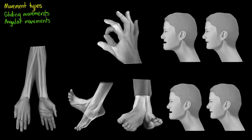You've probably noticed by now that I haven't pointed out any of these movement types on any of the pictures so far on the screen. That is because in this video we are focusing on the third movement type, called special movements. Special movements won't fit into any of our previous categories and we will only see them happening in a few joints. So let's have a look at what these movements could possibly be.